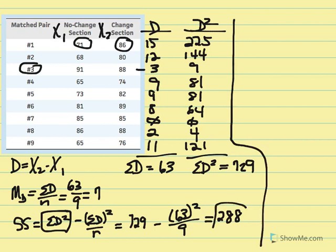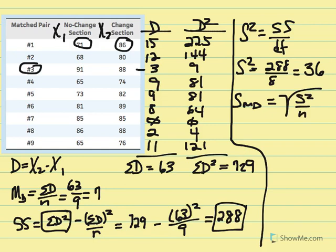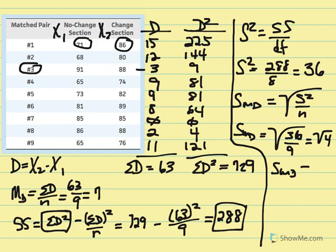With SS equal to 288, we calculate variance: SS / df = 288 / 8 = 36. Then the estimated standard error of the mean difference = square root of variance over N = square root of 36 / 9 = square root of 4 = 2. The estimated standard error of the mean difference is equal to 2.